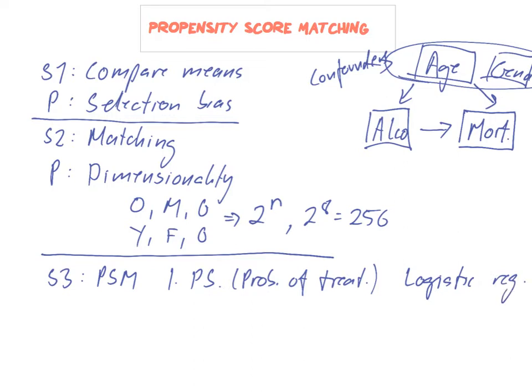Once you have the propensity score, the second step is to match people who have the same propensity score. You take one person who drinks, find another who does not drink but has the same probability of drinking, and compare their mortality. You do this for all individuals and take the overall average. You only need to match on one variable — the propensity score.